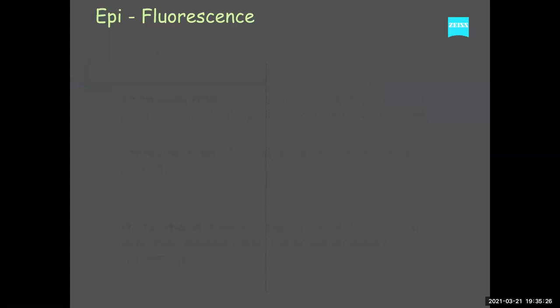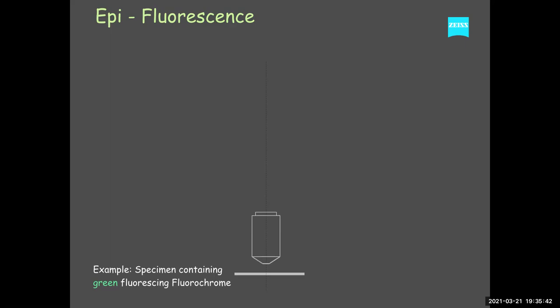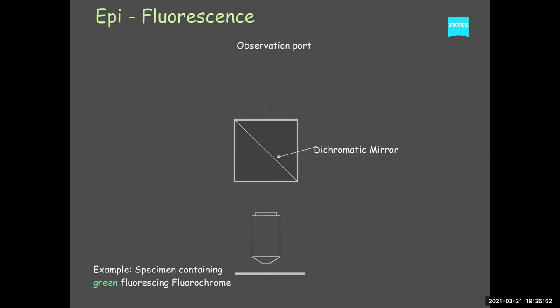Here's the diagram from last week. This week we're going to get a little video which is really helpful. Here's a specimen — there's a slide, there's a specimen — and that's an objective. That's your filter cube, right? With the beam splitter, also known as dichromatic mirror. There's the emission filter. There's the excitation filter. And we finally come to our light source.